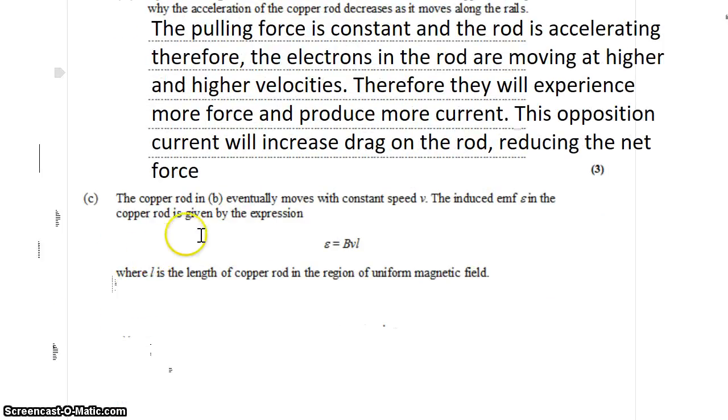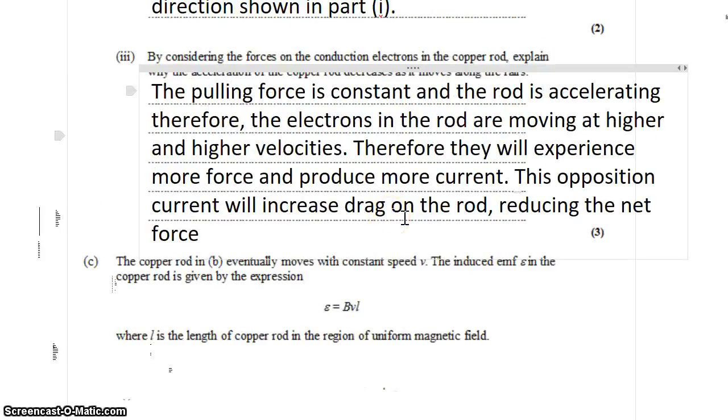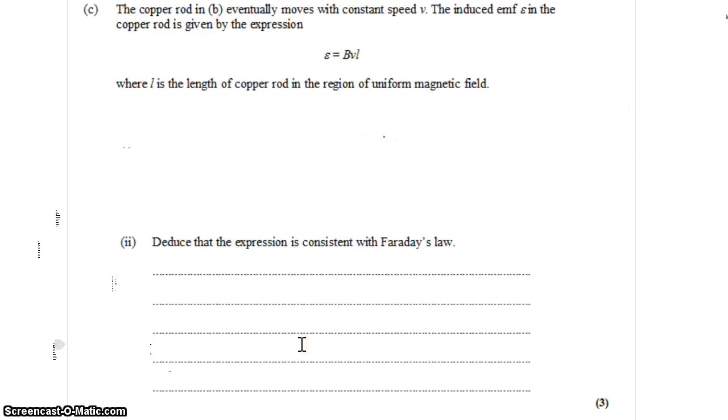The copper rod eventually moves with a constant speed. So at this point, the opposition force and the pulling force are equal and opposite. The induced EMF in the copper rod can be given by this expression: EMF is equal to magnetic field strength times the velocity of the rod times the length of the rod. Deduce that the expression is consistent with Faraday's law. So we'll start with Faraday's law, which tells us that the induced EMF is equal to the negative change in flux with time.